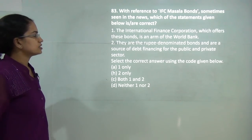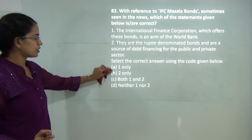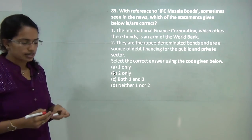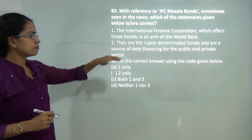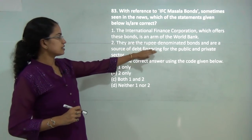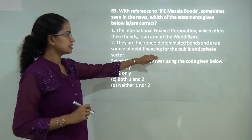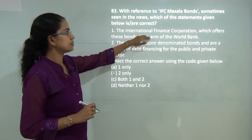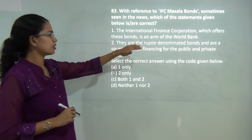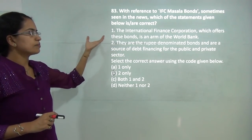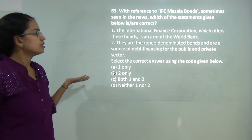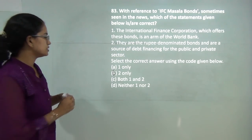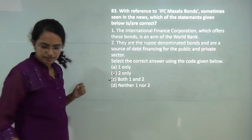Which of the following is correct regarding IFC Masala bonds? IFC Masala bonds are rupee-denominated bonds and a source of debt financing for the public and private sector — that is correct. These are issued by the International Finance Corporation, which is an arm of the World Bank. So both 1 and 2 are correct, and C would be the correct answer.